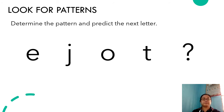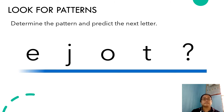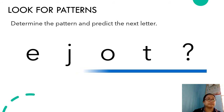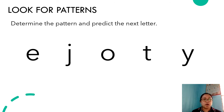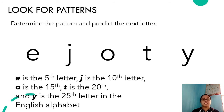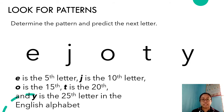Let's have another one. What letter should come after the letter T? You have 10 seconds. The answer is the letter Y. If we look at this particular set of letters, E is the fifth letter in the English alphabet, J is the tenth, O is the fifteenth, and T is the twentieth. That means the next letter would have to be the twenty-fifth letter in the English alphabet, which is the letter Y.